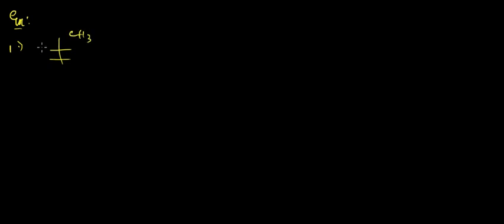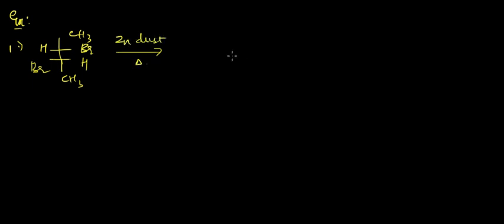Hi guys, in this lecture we'll be continuing to see more examples of 1,2-eliminations or dehalogenations. The first example is: we have CH3-CHBr-CHBr-CH3 and we pass it over zinc dust with heat.